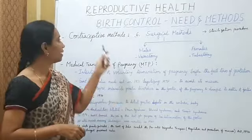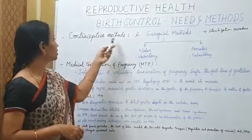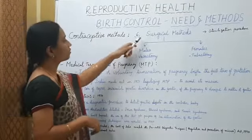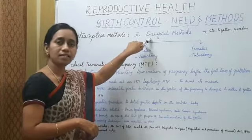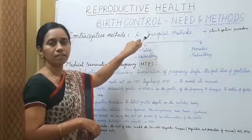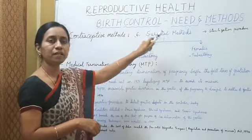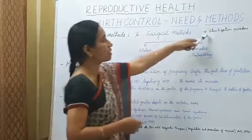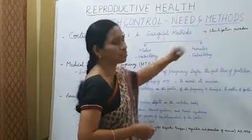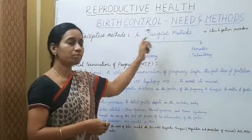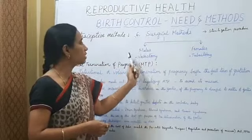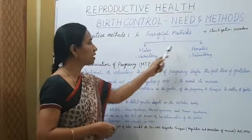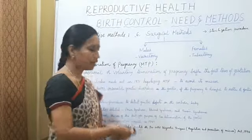Hi children. Here I am going to explain you about the last method of contraceptive method, that is surgical method. The prevention of pregnancy through surgical method is also called as sterilization procedure. The sterilization procedure in males is called vasectomy, and in females it is called as tubectomy.